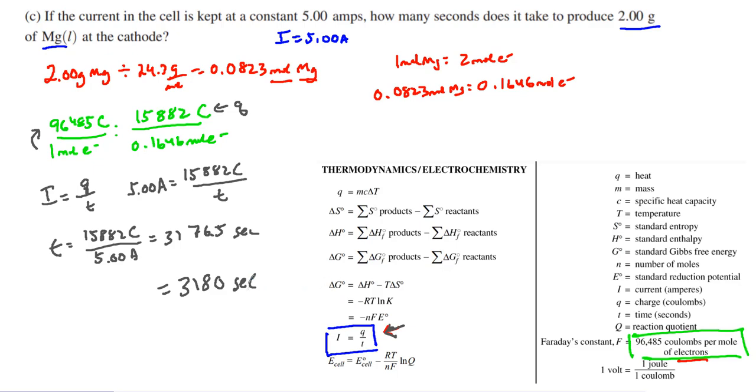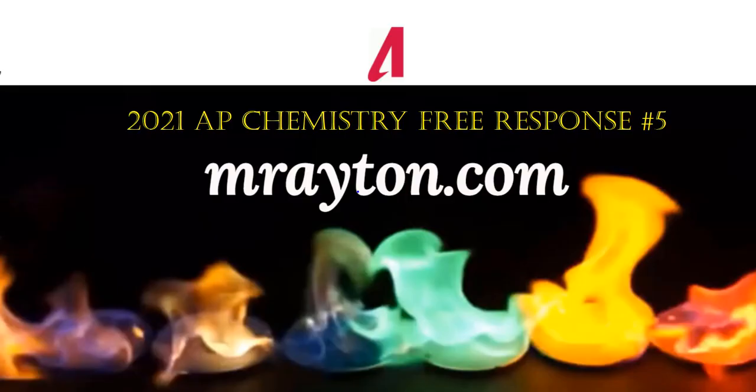And so that is how much time it would take in seconds in order to, and that's what we wanted, how many seconds. And so that is, with these electrochem problems, they're either going to have you go from grams to time or to amps or something like that, or they give you time in amps, you find coulombs, you go from coulombs to moles of electrons, moles of electrons to moles of a substance, moles of a substance to grams. You're going to either go forwards or backwards in these types of problems. Hope that helped. That is the 2021 AP Chemistry Free Response, number five.